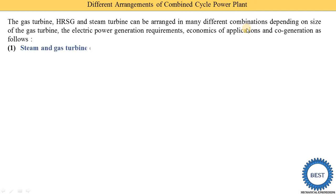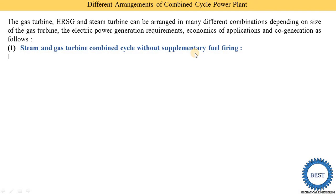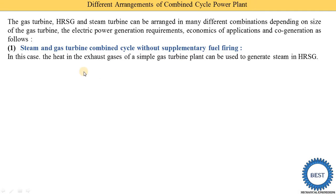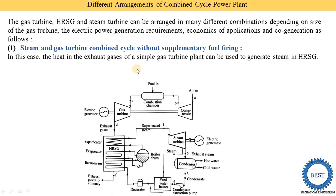The first arrangement is the steam and gas turbine combined cycle without supplementary fuel firing. This is the basic system. Understanding this requires knowledge of the combined cycle power plant. In this case, the heat in the exhaust gas of a simple gas turbine plant is used to generate steam in the HRSG.